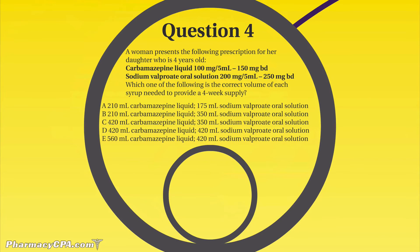Question four is about a woman who presents a prescription for her four-year-old daughter. It's written as two anti-epileptic agents as liquids: carbamazepine (Tegretol) 150 milligrams twice daily, and sodium valproate 200 milligrams in 5 mils, 250 milligrams twice daily. Which is the correct volume of each syrup needed to supply a four-week supply? The carbamazepine is given 150 mg twice daily, so that's 300 milligrams per day; per week that's 2100 milligrams, approximately 2.1 grams.